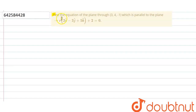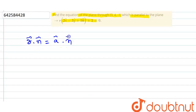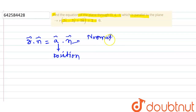Hello students. Here in this question we have to find the equation of the plane which passes through this point and which is parallel to this plane. We know that the general equation of the plane is given by vector r dot vector n is equal to vector a dot vector n, where vector a is the position vector of the point through which the plane passes, and the point given is 3, 4, minus 1.